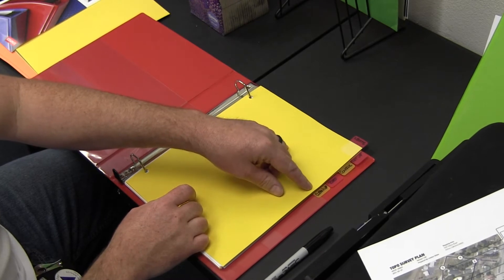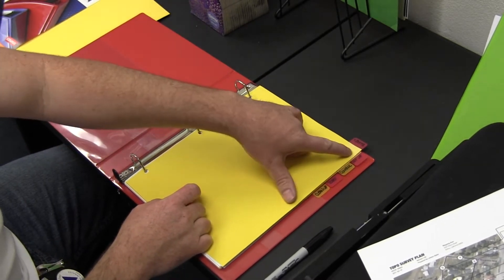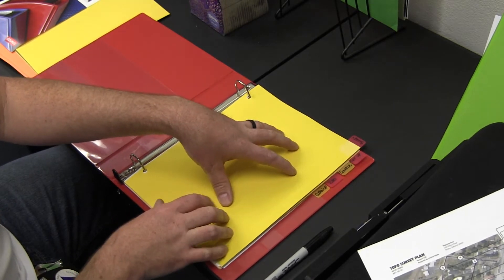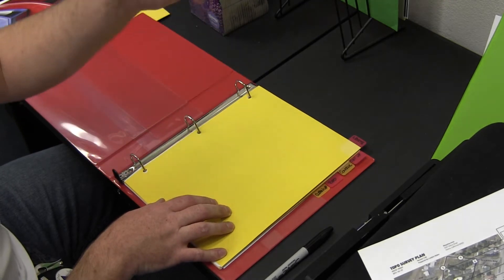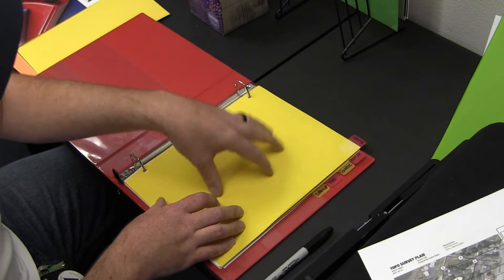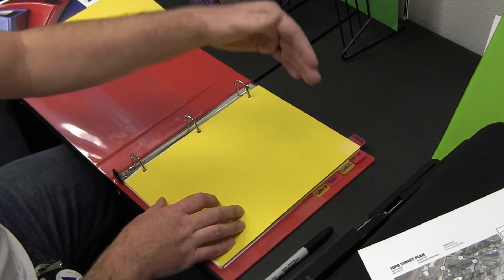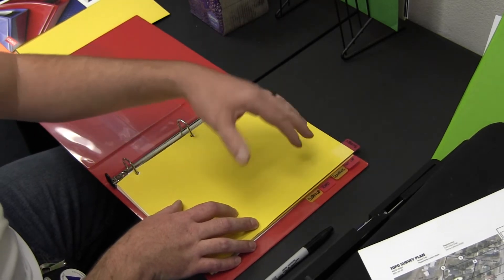When you open this up, we have a standard set of tabs here with some dividers. These tabs will change depending on what we're doing, but they're standard tabs across jobs. All the topos have the same tabs, all the boundary surveys have the same tabs, all the scanning projects have the same tabs.